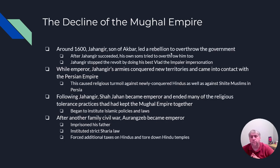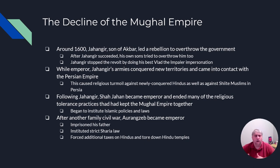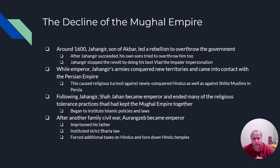The Mughal Empire starts to decline after the death of Akbar. Around the year 1600, Shahangir — Akbar's son — rebels against his father and takes over the empire. And then, almost ironically, one of Shahangir's own sons tried to overthrow him as soon as he gained control — so it's not a very stable empire at that point.